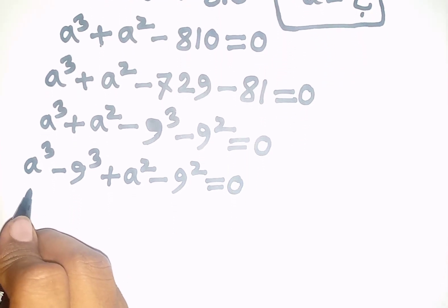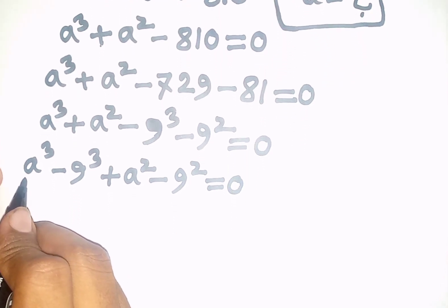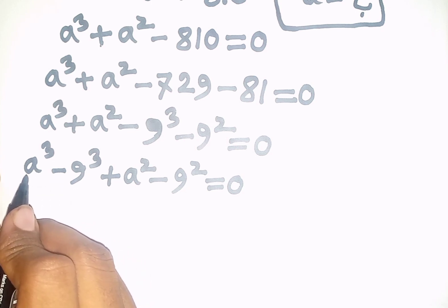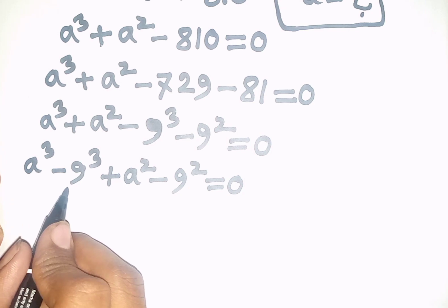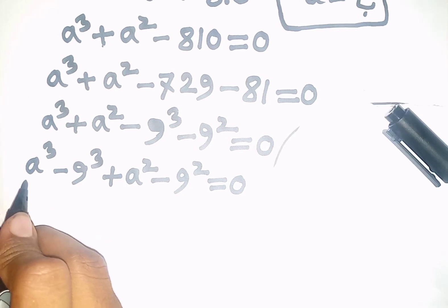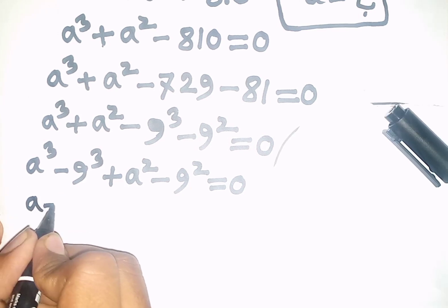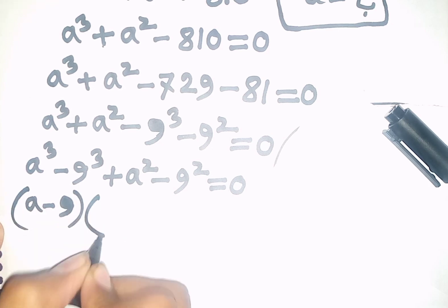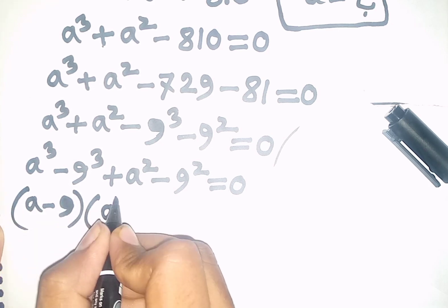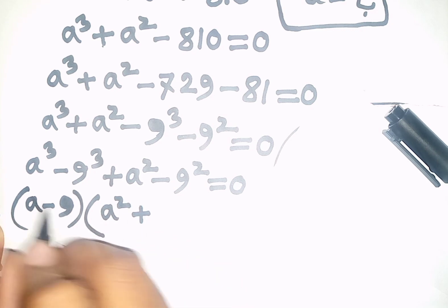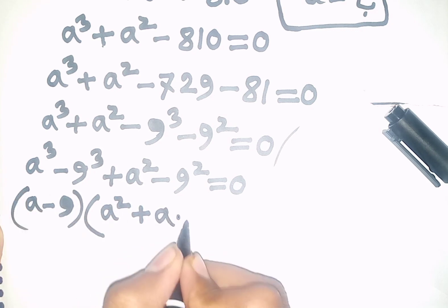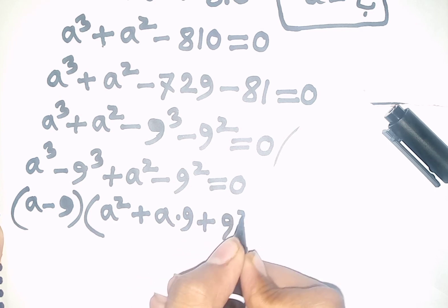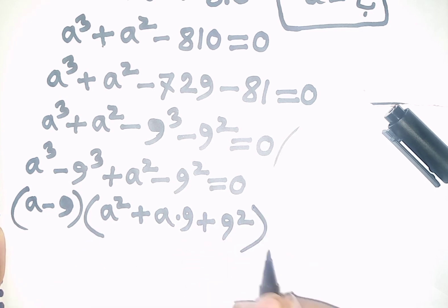Here we can apply the formula of a³ minus b³. Here a is as a but b is as 9. According to the formula we can write here (a - 9)(a² + 9a + 9²), then bracket close.